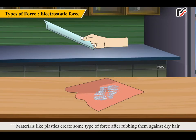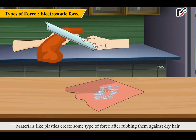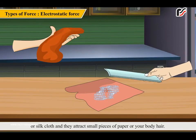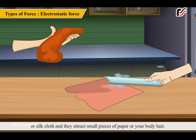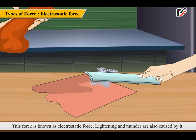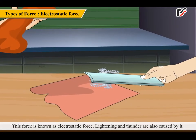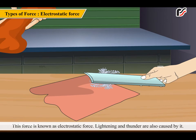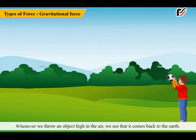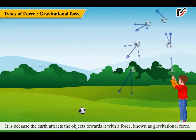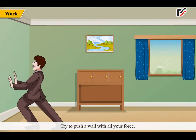Materials like plastics create some type of force after rubbing them against dry hair or silk cloth, and they attract small pieces of paper or your body hair. This force is known as electrostatic force. Lightning and thunder are also caused by it. Whenever we throw an object high in the air, we see that it comes back to the earth. It is because earth attracts the object towards it with a force known as gravitational force.